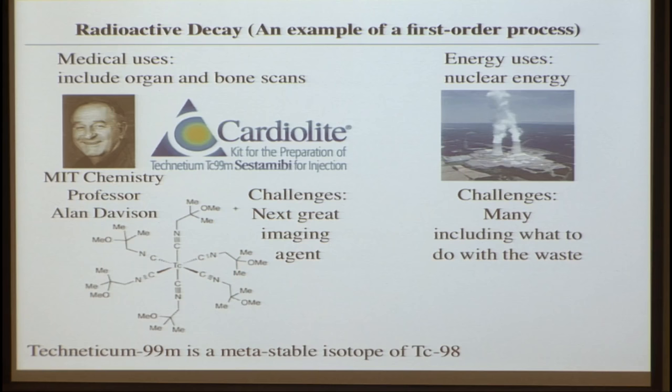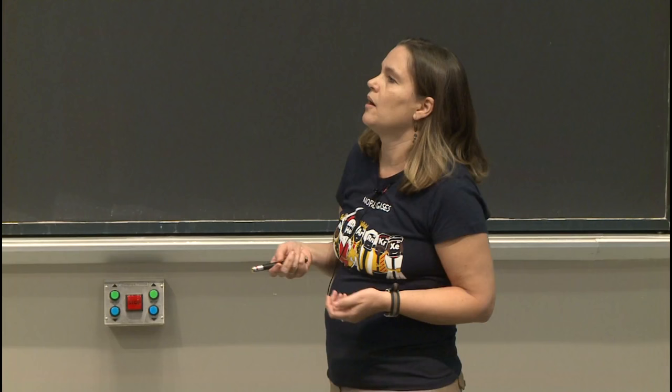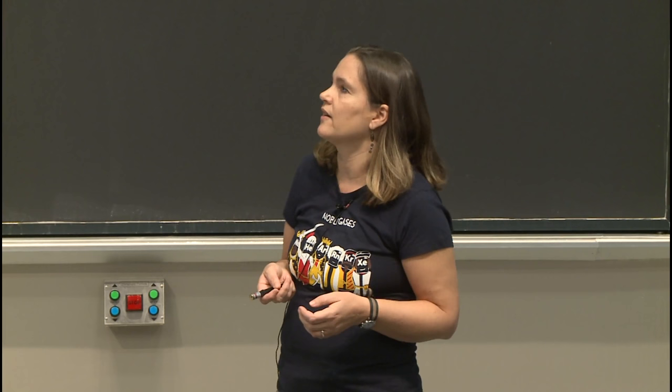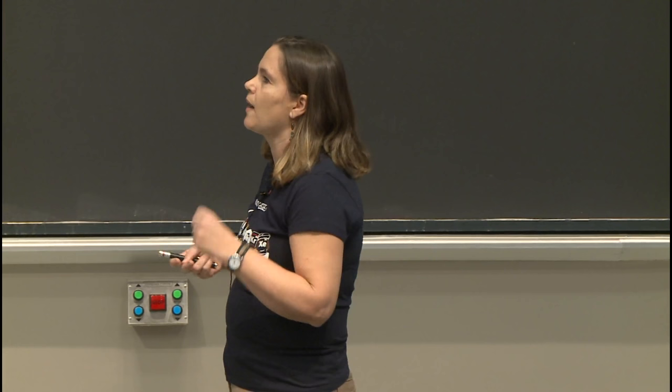Cardiolite uses an isotope of technetium, which is a metastable isotope — technetium-99, an isotope of the normal atomic mass 98. Researchers are always looking for the next great imaging agent, so this is still a very active area of research. There was actually a talk just this week on campus about work in this area, combining transition metals with radioactivity.